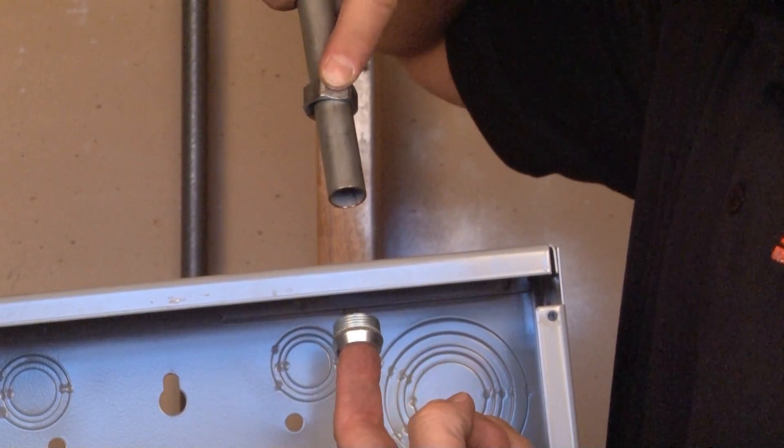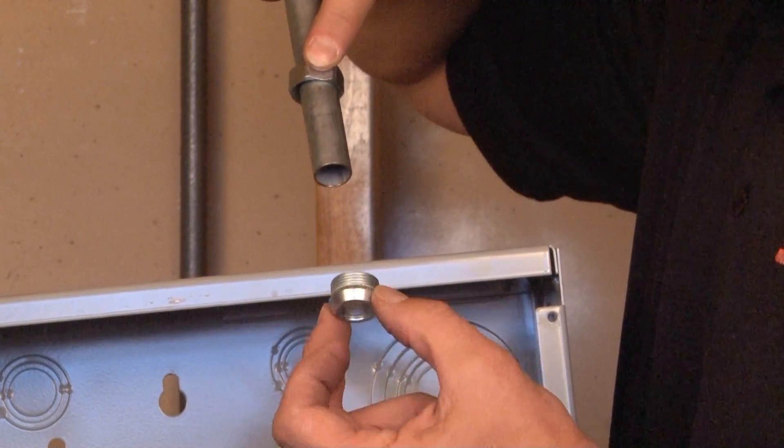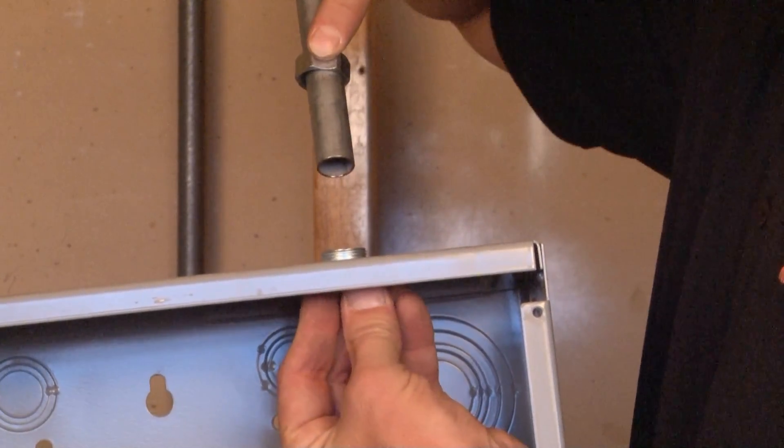To do this, we've removed a half-inch conduit knockout from this panel. Take the inner portion of the two-piece connector and slide it up and through your open knockout.